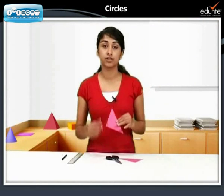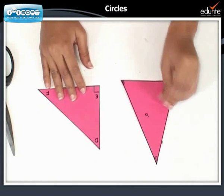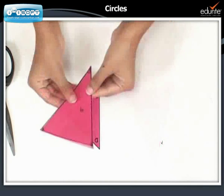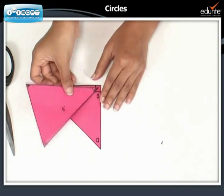Here we have right angle DEF with angle E measuring 90 degrees. Let us place angle ACB over angle DEF. Then point C will fall along E.